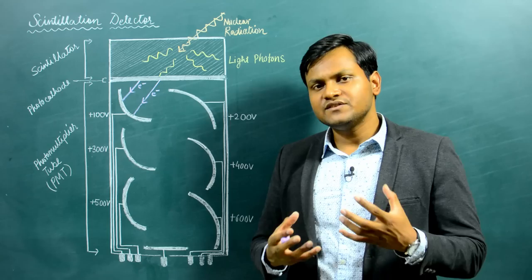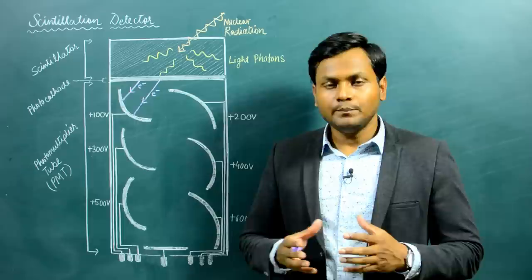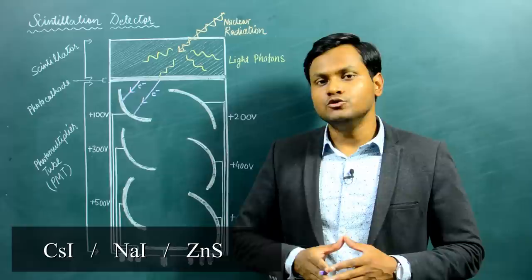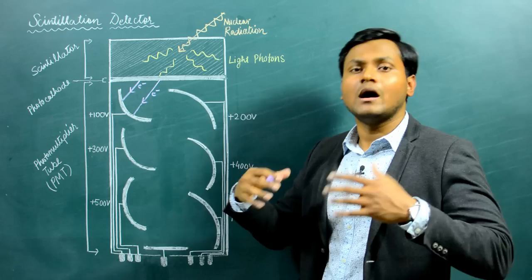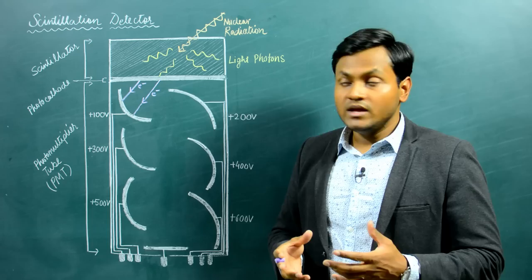Different kinds of scintillation detectors use different scintillator media. For example, cesium iodide (CsI) is used to detect protons and alpha particles, sodium iodide (NaI) is used to detect gamma radiation, and zinc sulfide (ZnS) is used for the detection of alpha particles. The job of the scintillator is simple: when an external alpha particle or gamma radiation enters, it converts the energy of that particle into low-energetic photons. Greater the energy of the incident radiation, the larger the number of photons created.